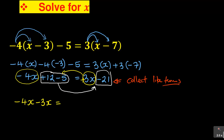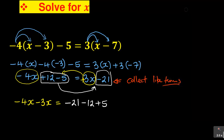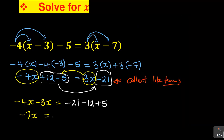Now look at 12: it was positive. When it jumps to join minus 21, it changes from positive to negative 12. And the 5 was negative — it will also change to positive 5. So you are just interchanging the signs. You now add minus 4X plus minus 3X — use your calculator. Minus 4 minus 3 gives negative 7, so you have minus 7X. On the number side, minus 21, minus 12, plus 5 gives you negative 28. So you have minus 28.